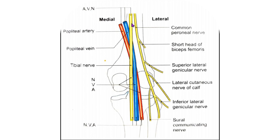The popliteal vessels and the tibial nerve cross the fossa vertically and are arranged one over the other. The tibial nerve is the most superficial. The popliteal vein lies deep or anterior to the tibial nerve. The popliteal artery is the deepest of them all, and is crossed posteriorly by the vein and the nerve. In the upper part, from medial to lateral side, we have the artery, the vein and the nerve.